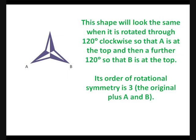This shape will look the same when it is rotated through 120 degrees clockwise, so that A is at the top, and then a further 120 degrees, so that B is at the top. Its order of rotational symmetry is 3, the original plus A and B.